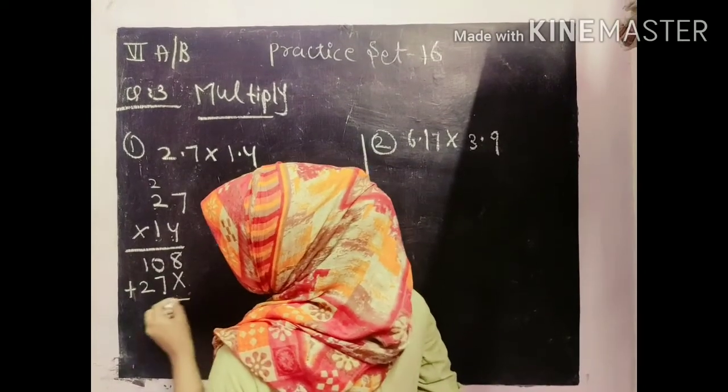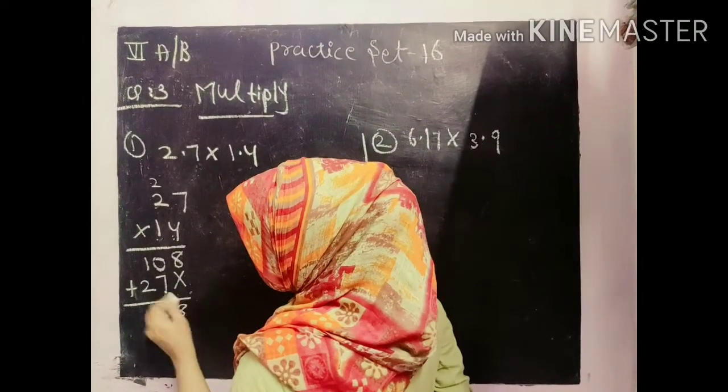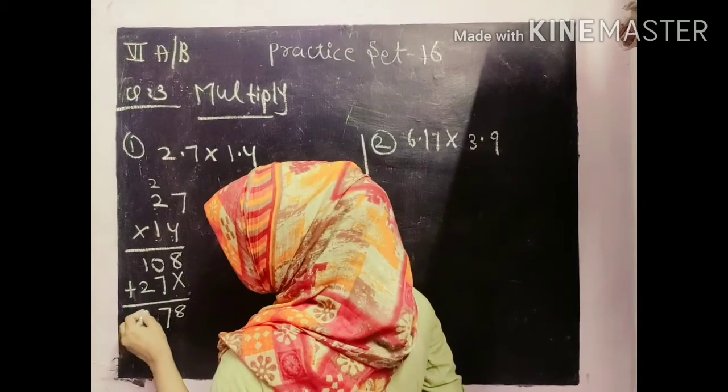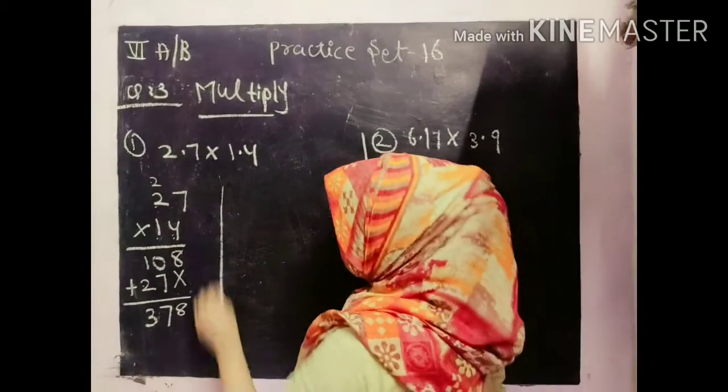7 ones are 7. 2 ones are 2. Then we will do addition 8, 0 plus 7, 7 and 2, 1 plus 3. Okay. This is first method.